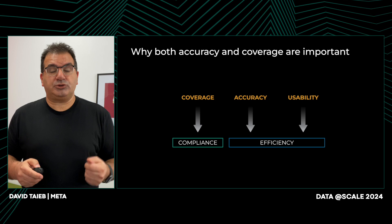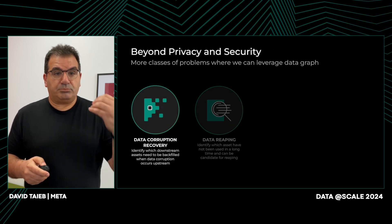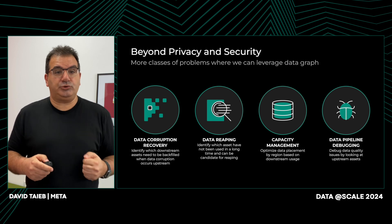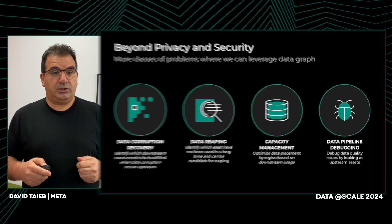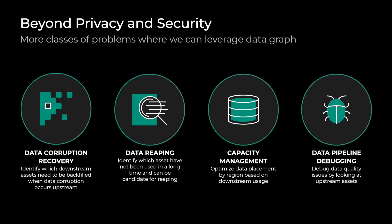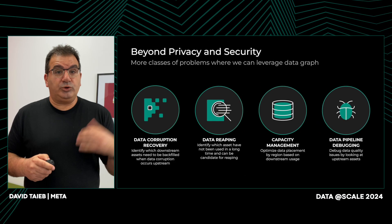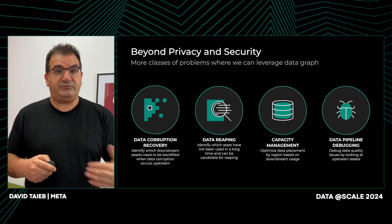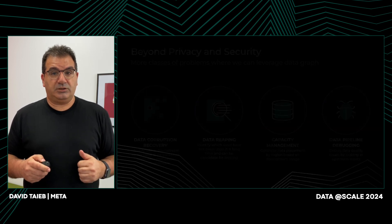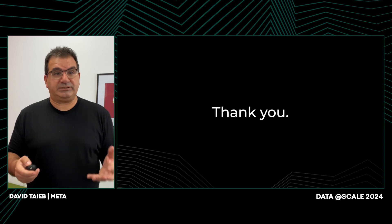Going forward, we want to look at how, beyond privacy and security, we can also use the data graph for more classes of problems. Data corruption recovery — to identify downstreams of assets so they can be backfilled properly. Data ripping — looking at which data has not been used for a long time and may be ready for deletion. Capacity management — optimizing data placement based on usage. And data pipeline debugging — looking at the upstream of an asset allows better visibility and debugging capability. This concludes the talk. Thank you for listening.